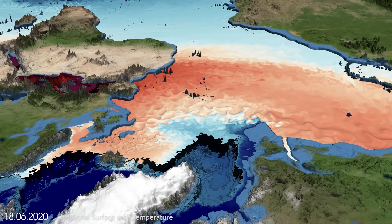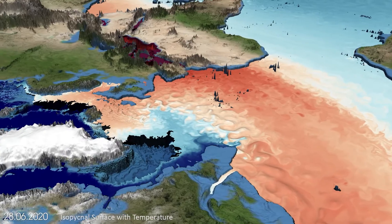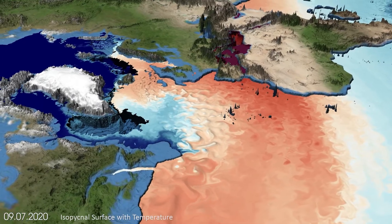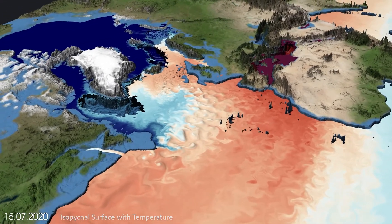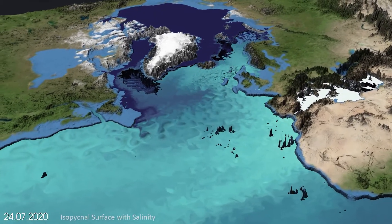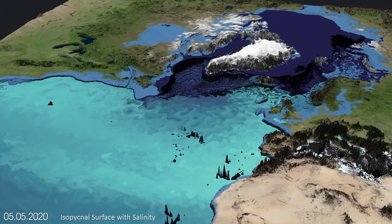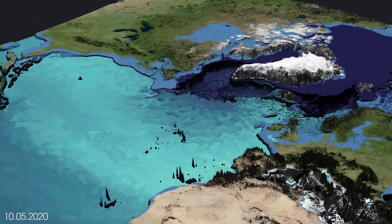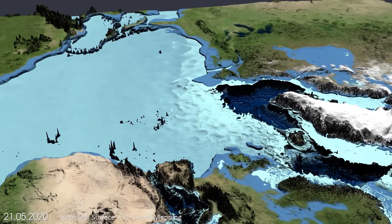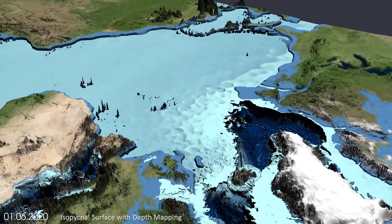An isopycnal layer, as can be seen here, is a 3D surface that cuts through the ocean and visualizes a layer of constant density. The density generally increases with depth, but also depends on temperature and salinity. Transports in the ocean's interior take place along these isopycnal surfaces. Additionally, we can also map other variables on top of the surface, such as temperature, salinity, or depth information. The depth map portrays the eddying structure of the North Atlantic current as hills, as they transport denser water, warmer and saltier than the surrounding ocean.